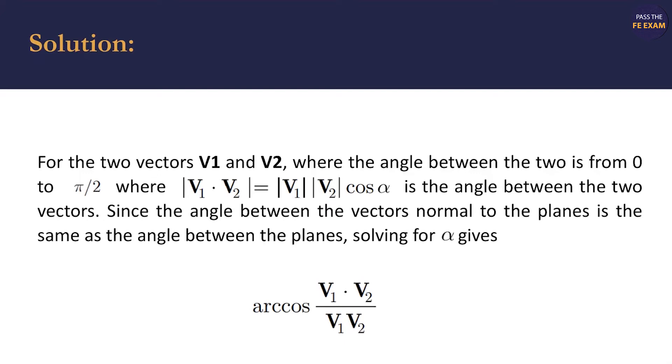equals the magnitude of V1, V2, that's what that's called when they're both in brackets like that, cosine the angle. And that's the angle between the two vectors.